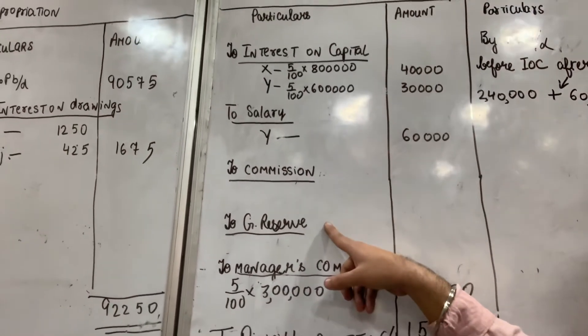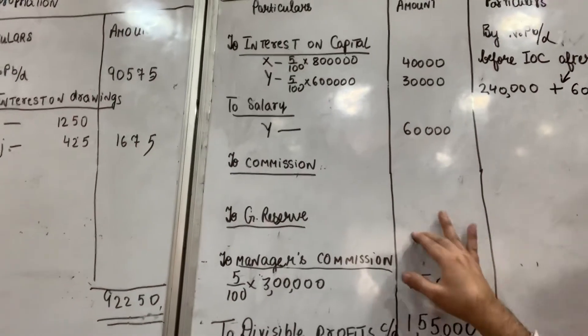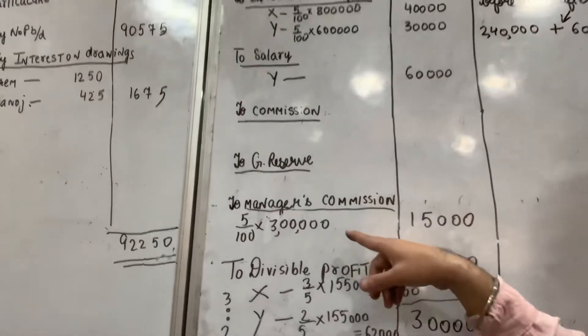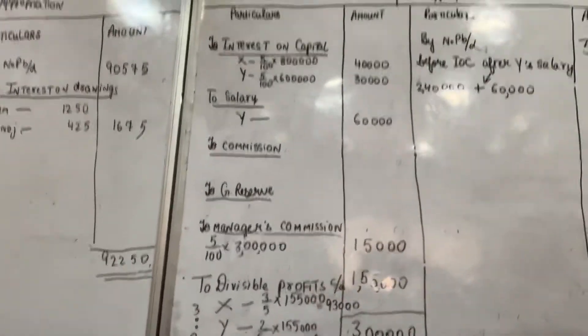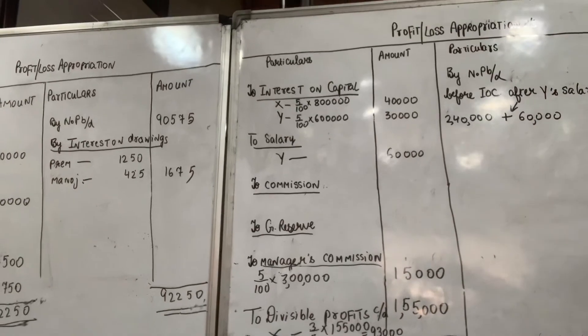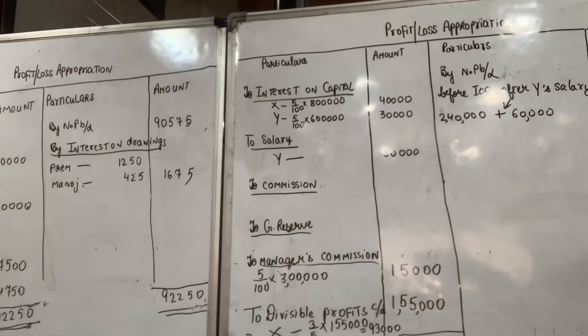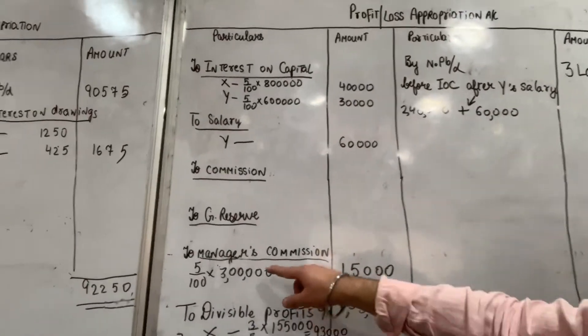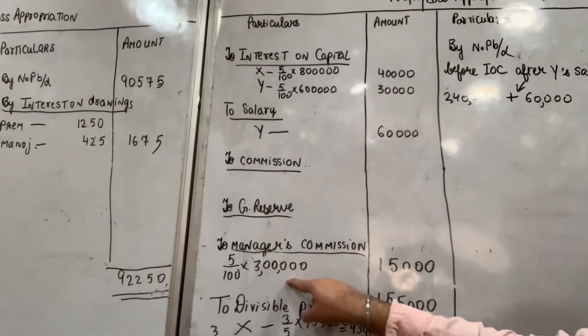Then general reserve — all these items are to be written. The manager's commission is 5% of net profit. So, five percent of net profit is calculated.